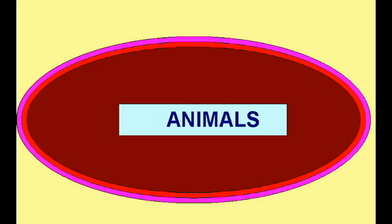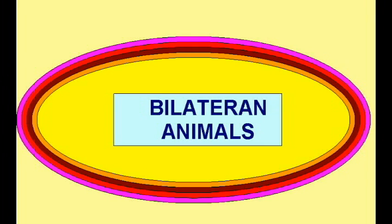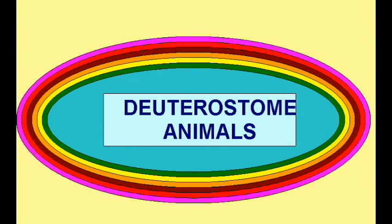Some eukaryotes became multicellular, and are known as animals. Some animals developed nervous and muscular tissue, and are known as metazoan animals. Some metazoans developed a brain and bilateral symmetry, and are known as bilateran animals. Some bilaterans developed a body cavity, and are known as coelomates. Some coelomates developed a specific pattern of early embryonic development, and are known as deuterostomes.